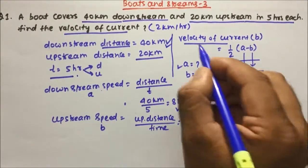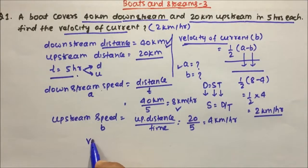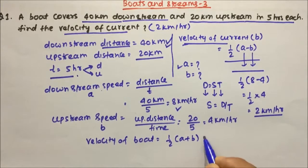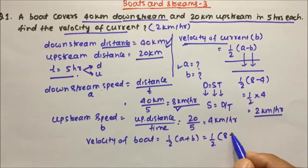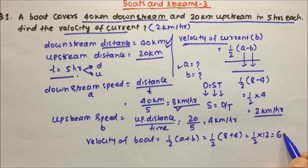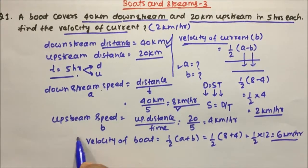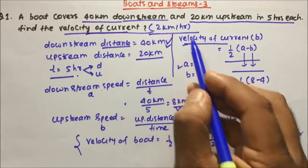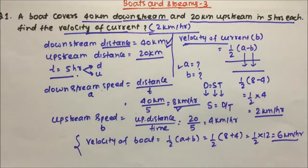In the same question, if they ask for the speed of the boat, the formula is: speed of boat = 1/2 × (A + B) = 1/2 × (8 + 4) = 1/2 × 12 = 6 km per hour. But here they asked only the velocity of the current, which is 2 km per hour.